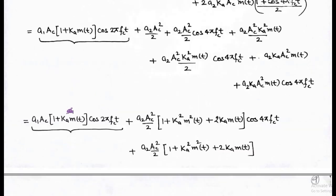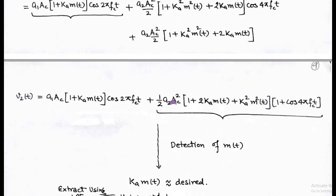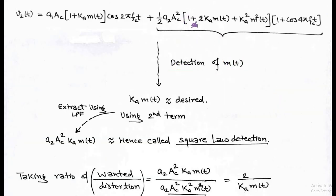For the second part, we determine the condition under which m(t) may be recovered from v2(t). Taking common terms in the second and third parts, we get v2(t) = a1·Ac·[1 + ka·m(t)]·cos(2π·fc·t) + (a2·Ac²/2)·[1 + 2ka·m(t) + ka²·m²(t)]·[1 + cos(4π·fc·t)]. To detect m(t), we use the second term — this is called square law detection. The desired term ka·m(t) can be extracted using a low pass filter. After passing through the low pass filter, we obtain a2·Ac²·ka·m(t).